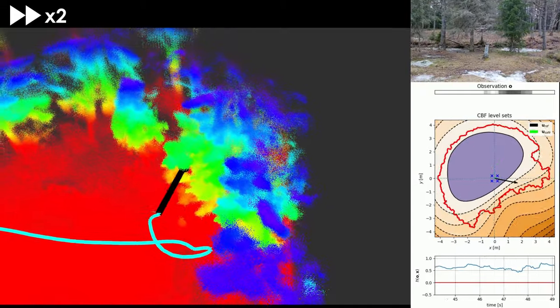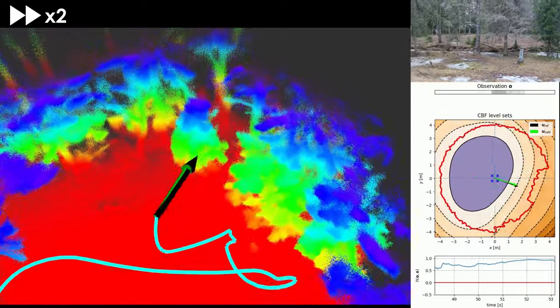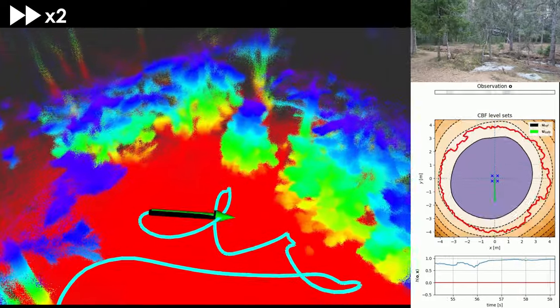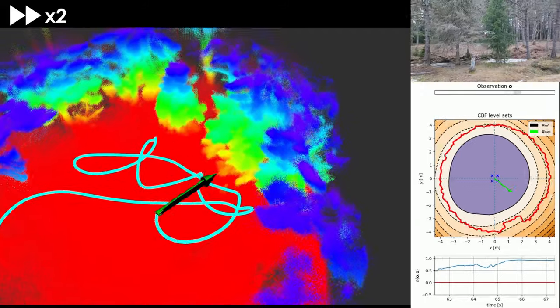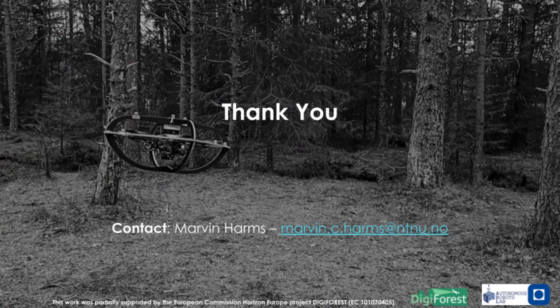The safety filter prevents collision of the robot while only relying on a local observation and velocity estimates. Note that the map in the video is just for illustration and is not used by the safety filter.